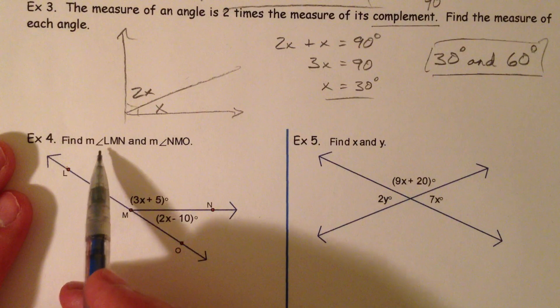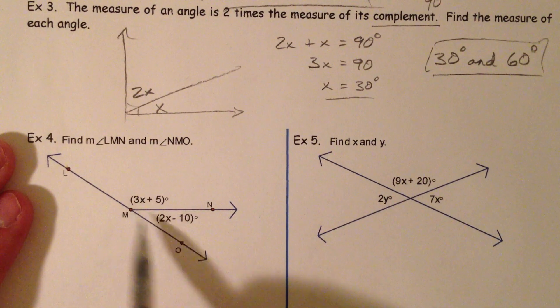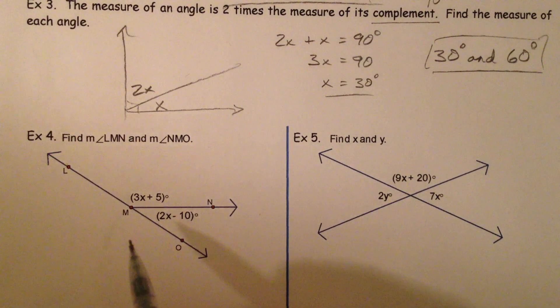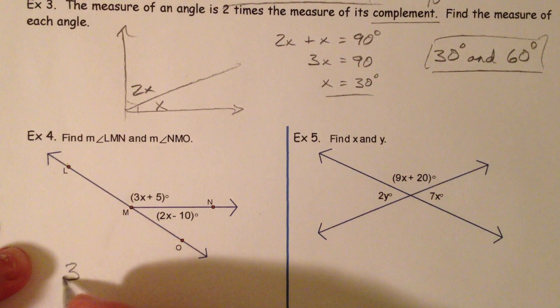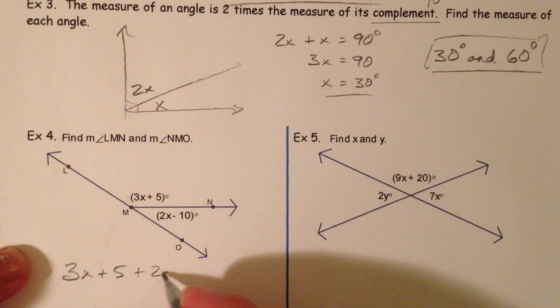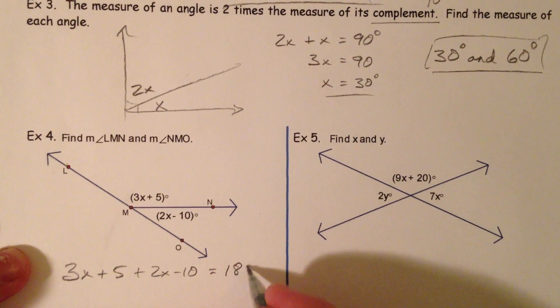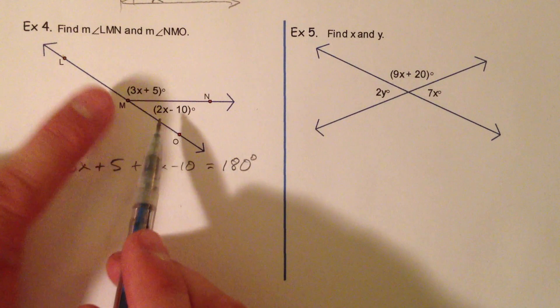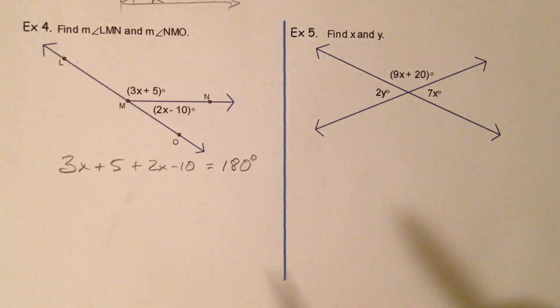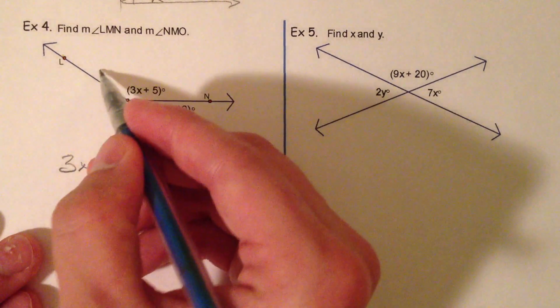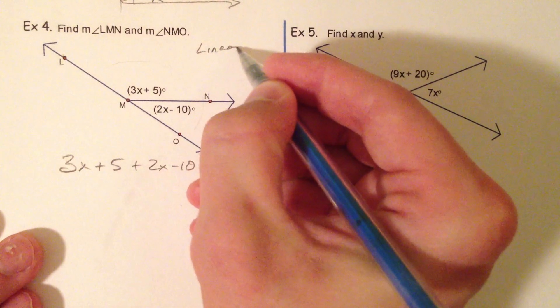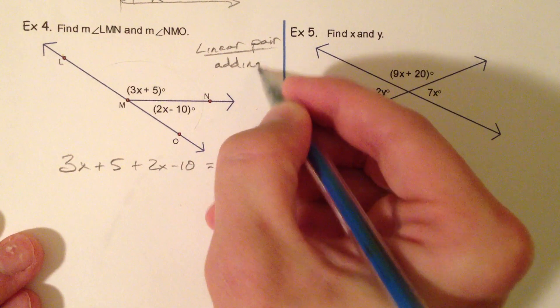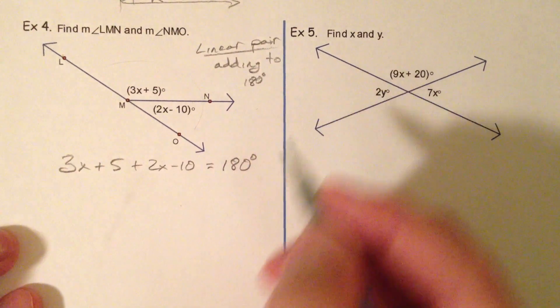So find the measure of angle LMN and NMO. Notice we've got a straight angle being formed here. We've got two adjacent angles that are equal to 180. So let's add them together. 3X plus 5 plus 2X minus 10 equals 180. The secret in this is the equation. If you set these two things equal to each other, you will be wrong. If you add them together and say they're equal to 90, you will be wrong. So you have to recognize this as a linear pair. You have to recognize it as adding to 180. Otherwise, you're going to end up in the wrong spot.